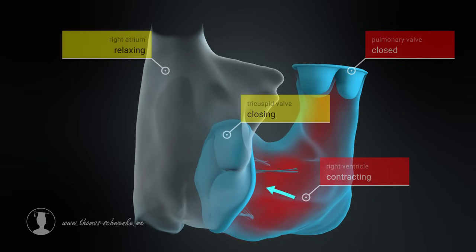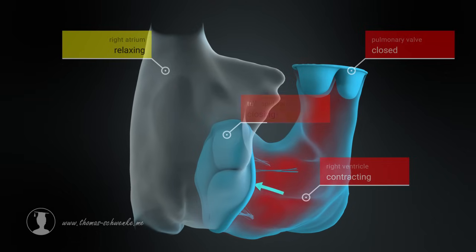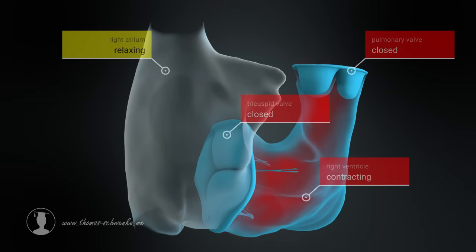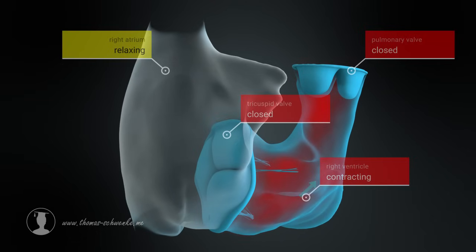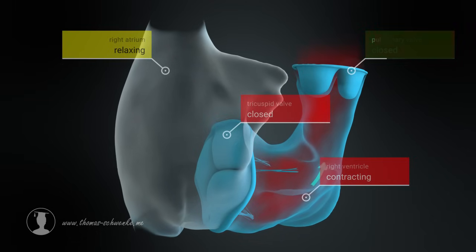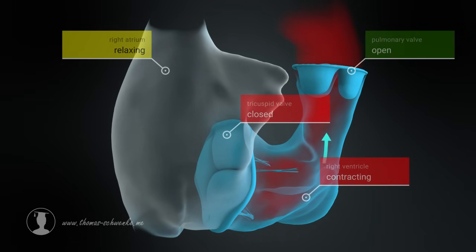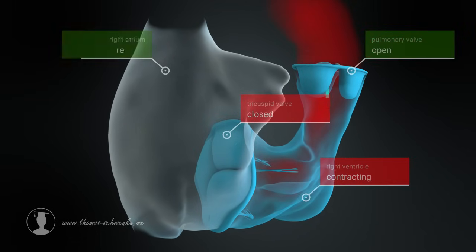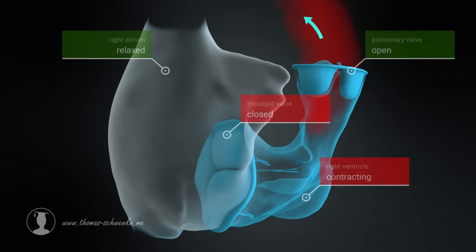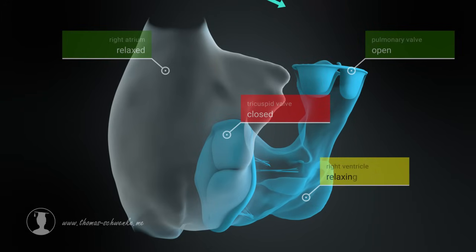The ventricular muscles contract further and increase the pressure, opening the pulmonary valve and forcing the blood into the pulmonary artery. When the ventricular muscles relax again, the pressure inside the ventricle drops.